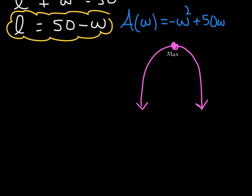The maximum occurs at the vertex of your parabola. If we find the coordinates of the vertex, we've answered the question. In this context, the coordinates of the vertex are w comma A of w. The first coordinate, your input, represents the width of your garden; and A of w, your output, represents the area of the garden.